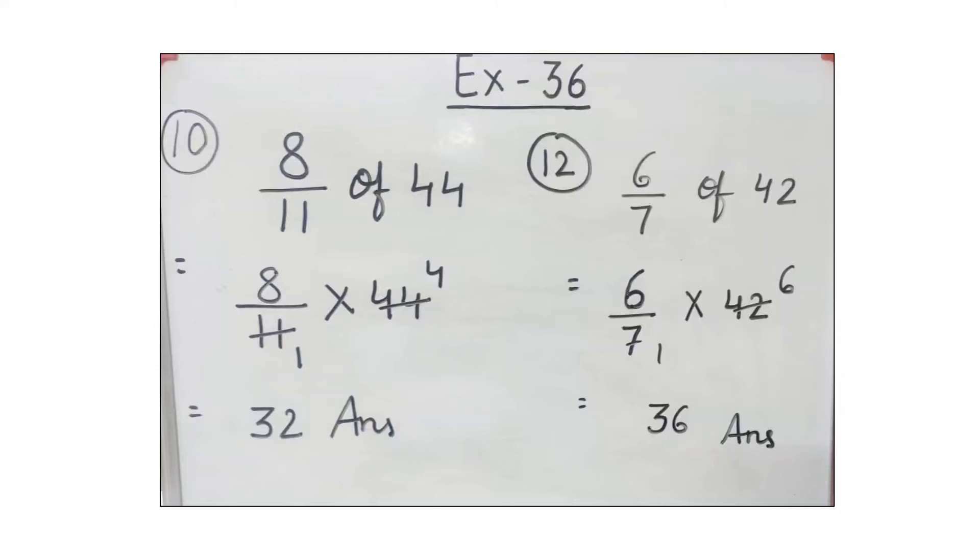Question number 12: 6 by 7 of 42. We will write the multiply sign in place of OF. 6 by 7 multiply 42. Can we cancel 7 and 42?